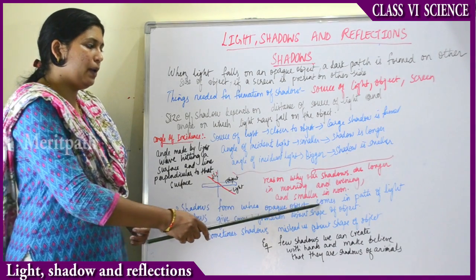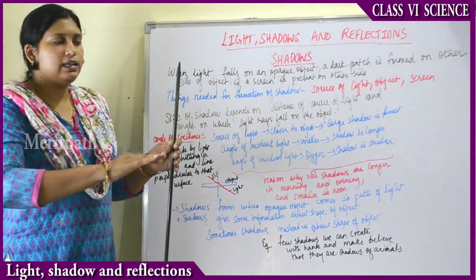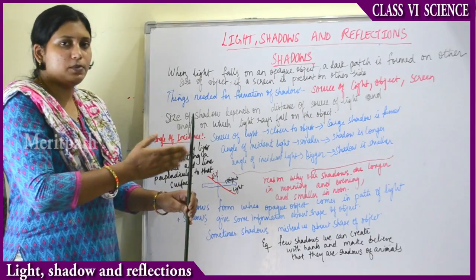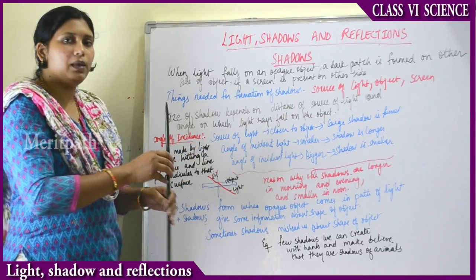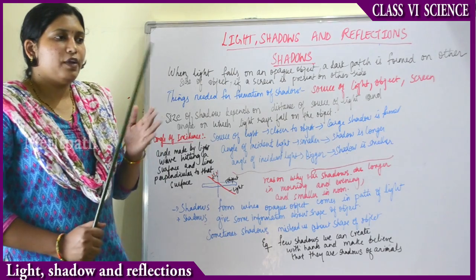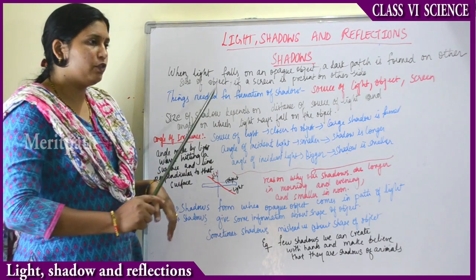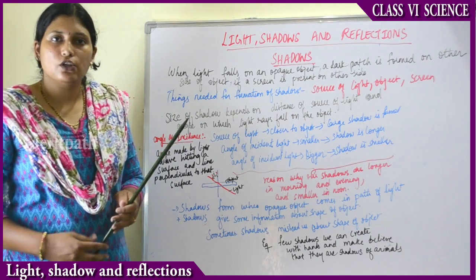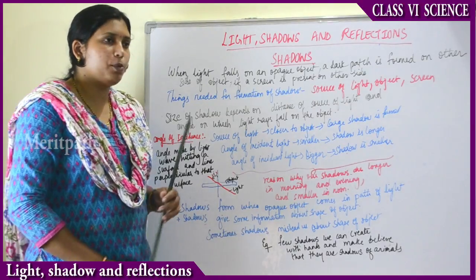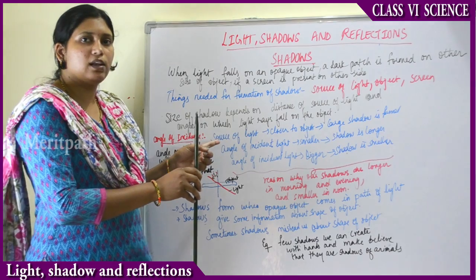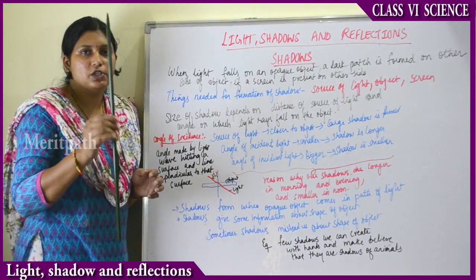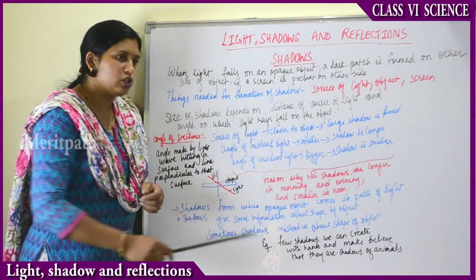Shadows form when an opaque object comes in the path of light, and when there is a screen behind — only then do shadows form. Shadows give us some information about the shape of the object. When a shadow forms on a screen, you can outline the shape and that gives you an image of how the object looks.